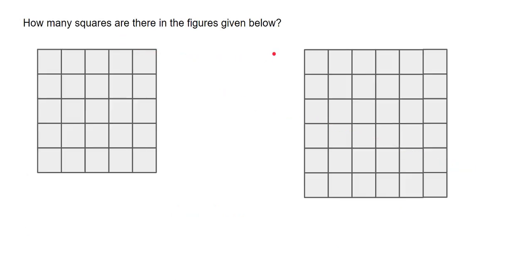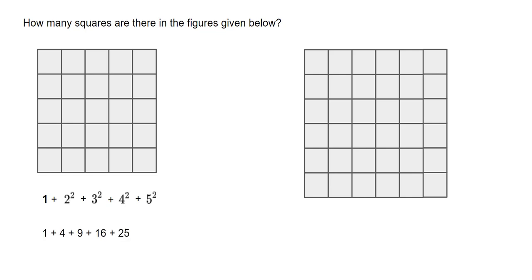How many squares are there in a five by five figure? We just figure out how many rows or columns there are: five rows and five columns — it's a perfect square. So we can write it as one plus two squared plus three squared plus four squared plus five squared, which is one plus four plus nine plus sixteen plus twenty-five.